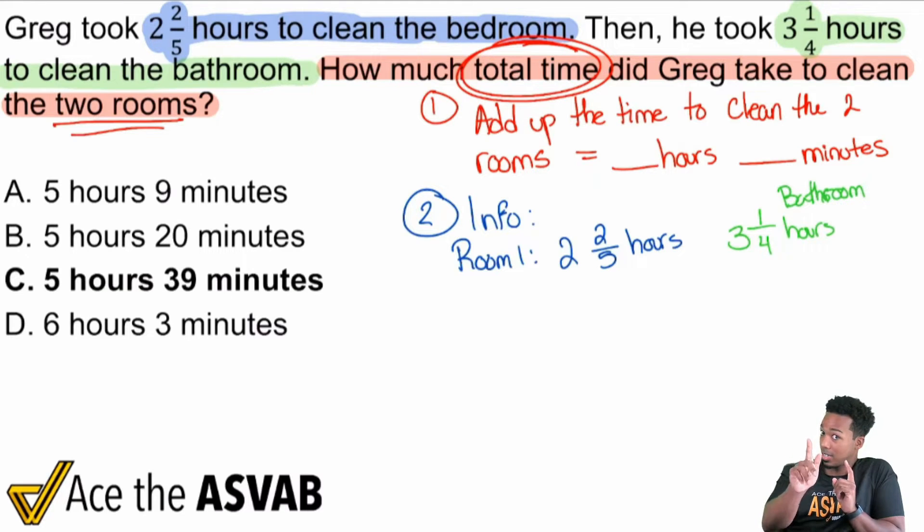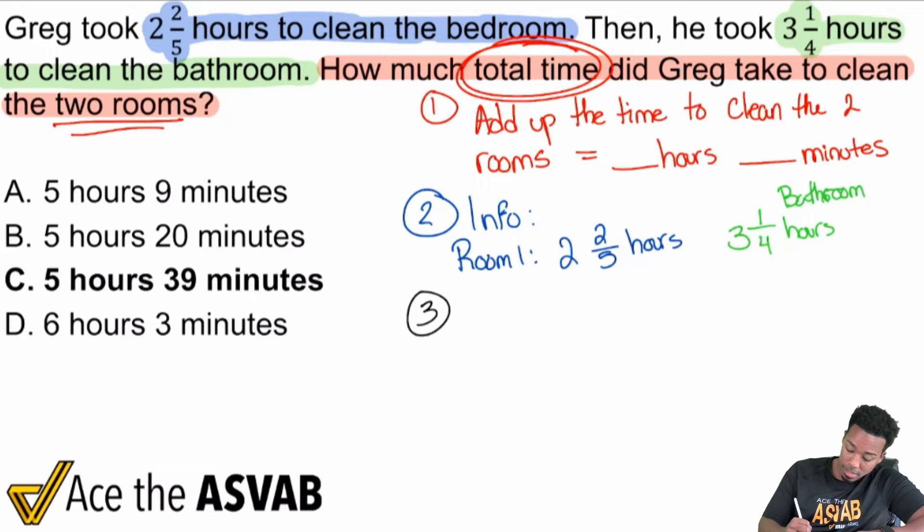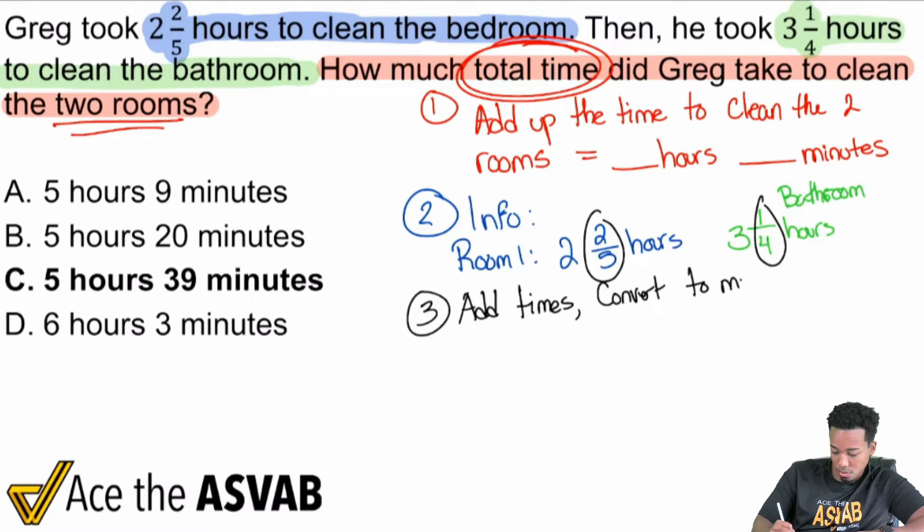Except, except notice how we have mixed numbers here. Notice how it says 2/5 hours. Is that in minutes? No. So we're going to have to go ahead and think about what that means here. So step three, this is our connection. What do we want? What do we have? What's the connection? So step three here in the connection, it's going to be add the times, convert the fraction part into minutes. So with that said, here's a nice, easy way we can go about this game. There's really two ways.